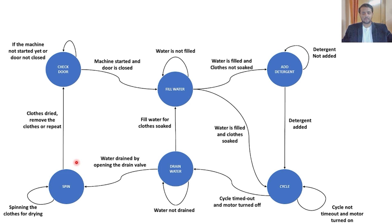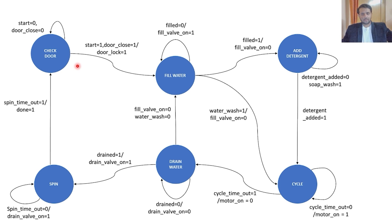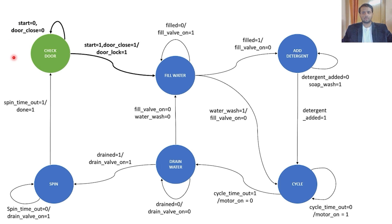A very good feature of washing machines is that you can also dry the clothes. That is done in the spin state, where we have a timer to determine how long we need to dry the clothes. After the spin timer is completed, the clothes are dried and you can remove them, or we can repeat the process if required. For the transition details: the first state is check door, where until the start and door close variables are not set, we cannot transition to the next state.